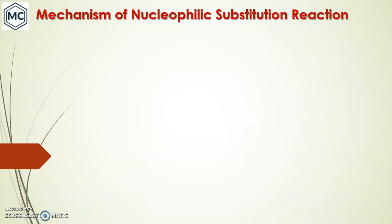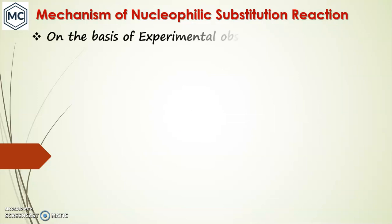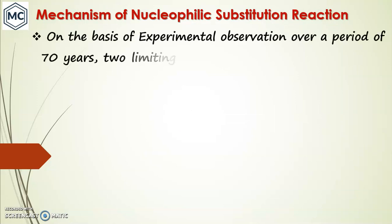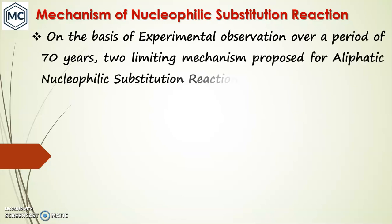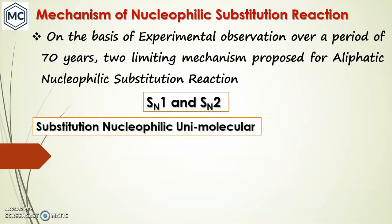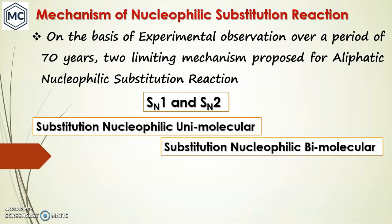What are the mechanisms of nucleophilic substitution reactions? On the basis of experimental observations over 70 years of data, two mechanisms have been proposed for aliphatic nucleophilic substitution: SN1 and SN2. SN1 is substitution nucleophilic unimolecular, and SN2 is substitution nucleophilic bimolecular.